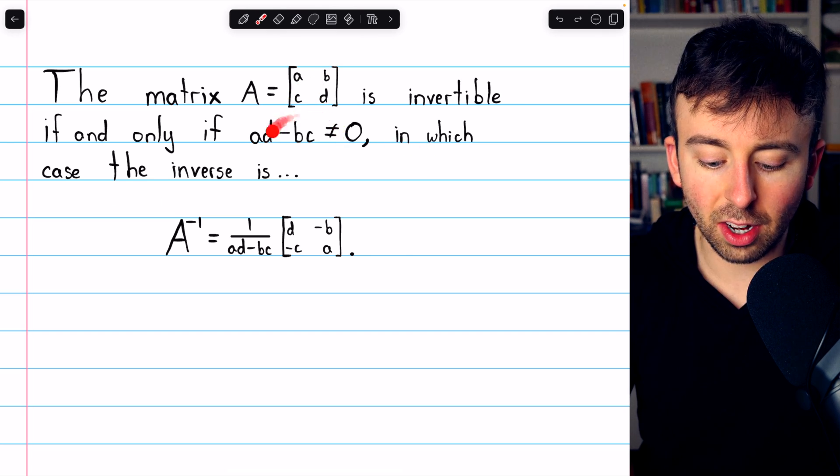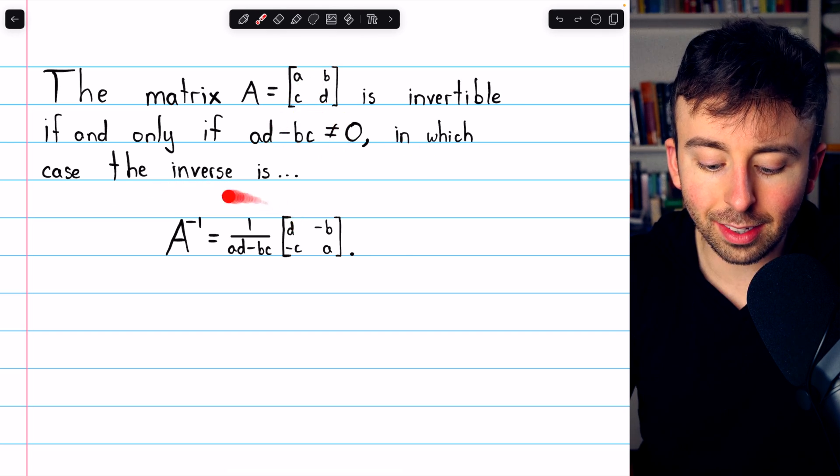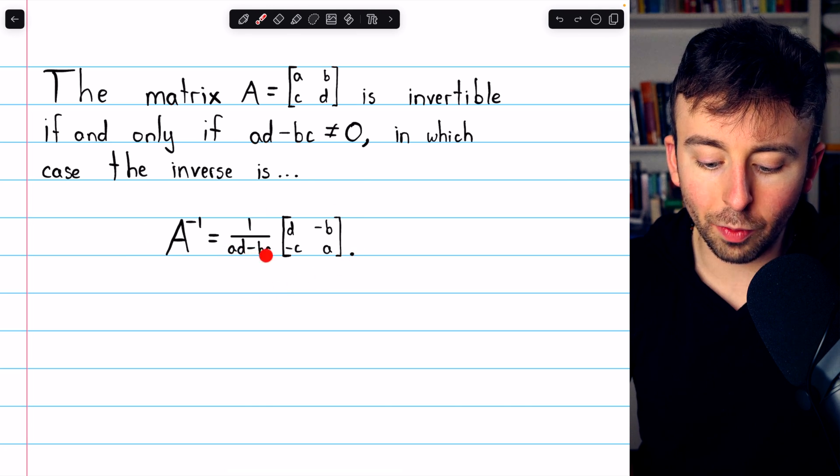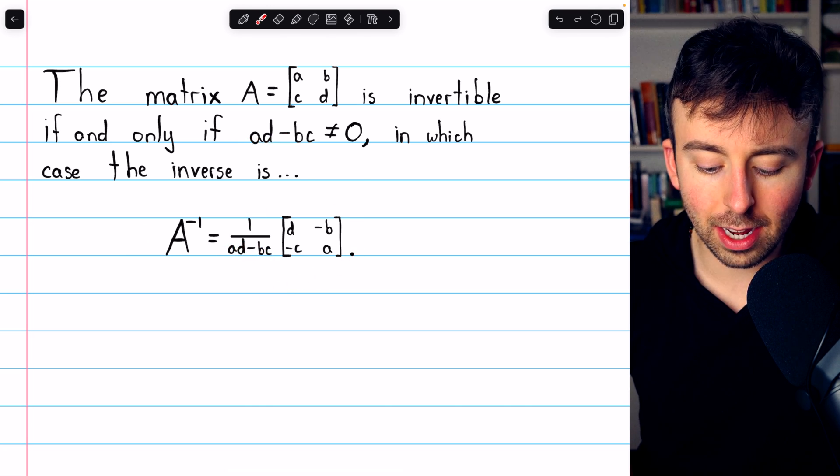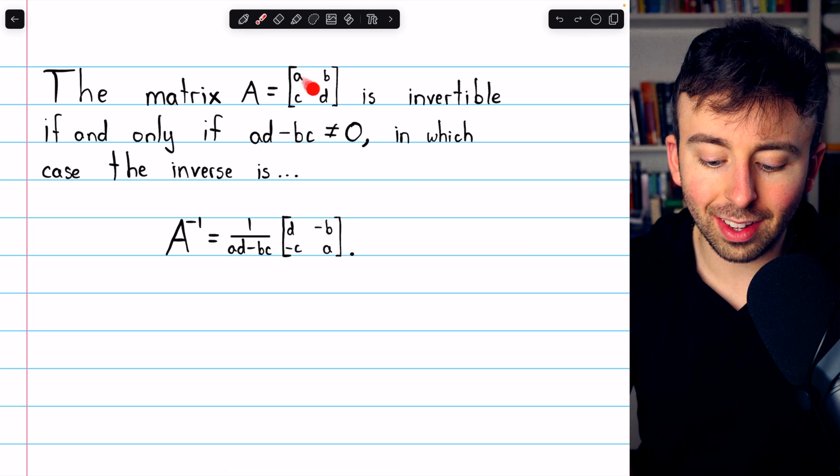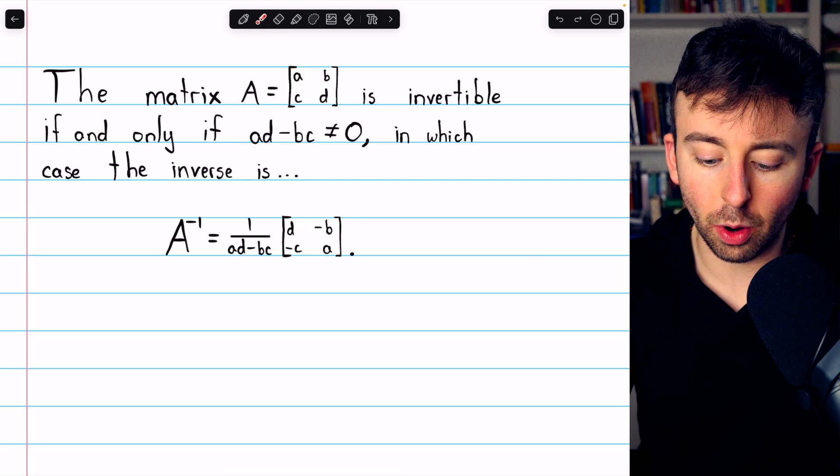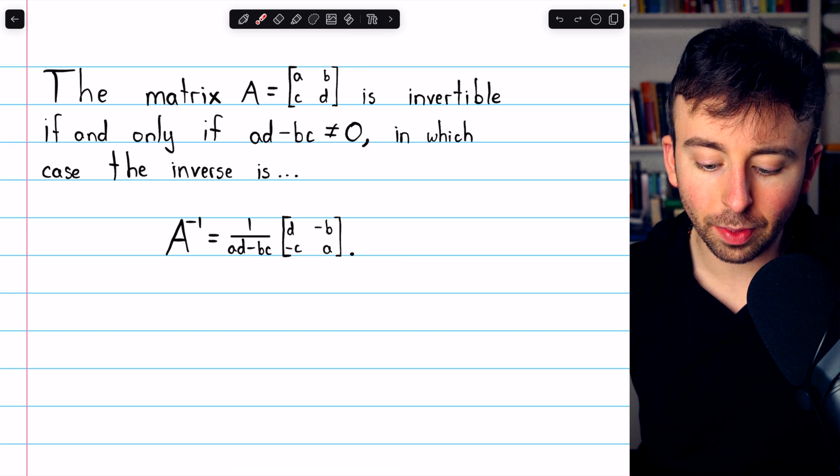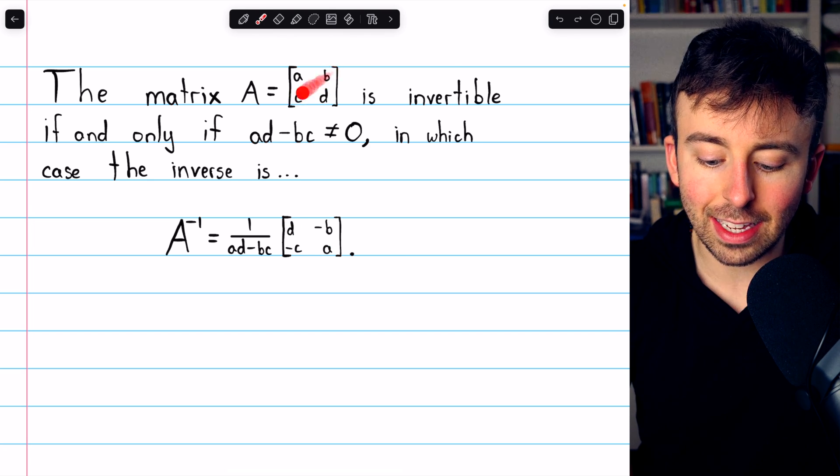In which case, if this is not 0, the inverse is this: 1 over that difference, AD minus BC, multiplied by—you can think of this as just reflecting across that main diagonal. So AD becomes DA, and then just negate the off diagonal, negative B and negative C.